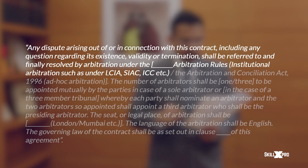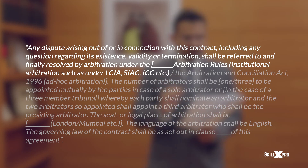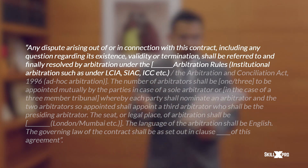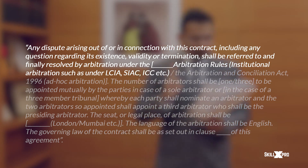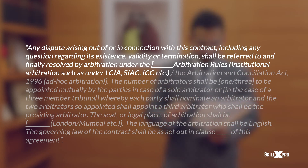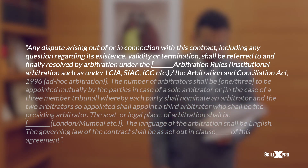Here we are defining what disputes will be submitted by the parties to arbitration — any question regarding the existence of the agreement, validity, or termination of that particular contract in which this arbitration agreement is embedded will be finally resolved by arbitration. Purpose number one is achieved: specifying what disputes will be submitted. Purpose number two is the arbitration rules by which the particular arbitration proceedings will be governed — either LCIA, CIAC, ICC, or the Arbitration and Conciliation Act 1996, which is mostly referred to as an ad hoc set of arbitration.